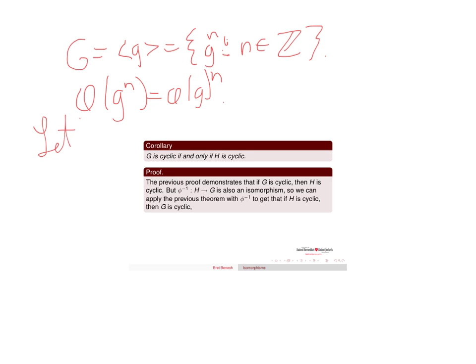Let H belong to H. Since phi is onto, there is an X belonging to G with phi of X equal H.